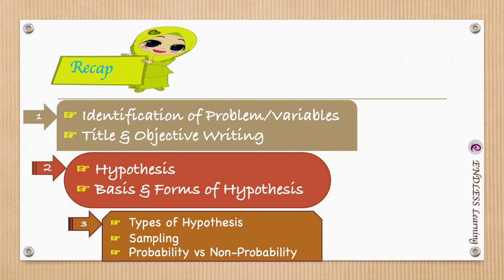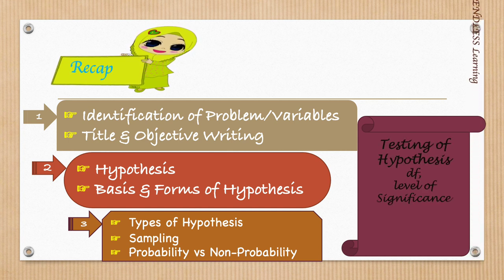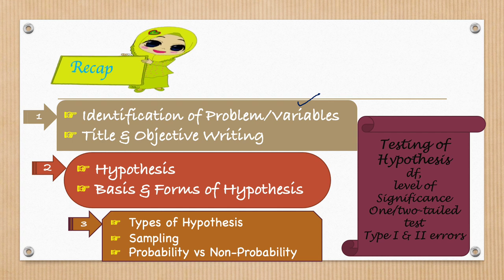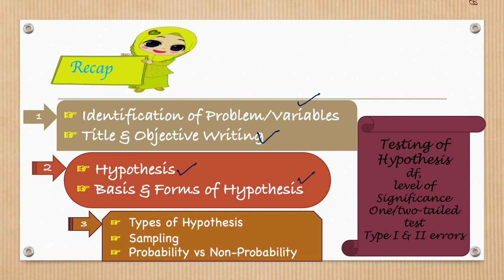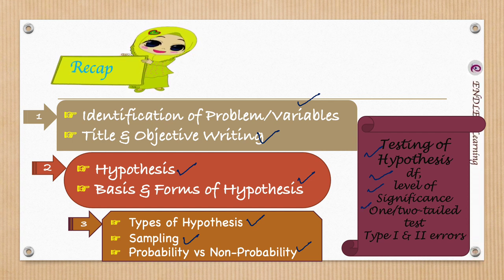Previously we covered identification of the problem and how to identify the variables. We also learned how to write the title and the objectives for the research, and we learned about the hypothesis — the forms and types of hypothesis. We covered sampling techniques: probability sampling and non-probability sampling, and their subtypes. We also saw how to test the hypothesis, degree of freedom, level of significance, two-tailed and one-tailed tests, and type one and type two errors.